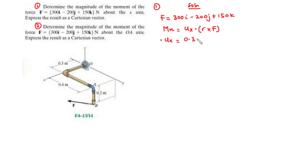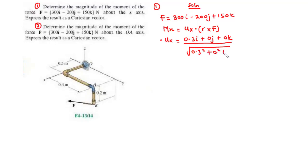Since we are finding the unit vector directed along the X axis, we have no J or K components. The unit vector Ux equals 0.3i divided by the magnitude, which is the square root of 0.3 squared, leaving us with 0.3 divided by 0.3. So we simplify and obtain Ux equals i.